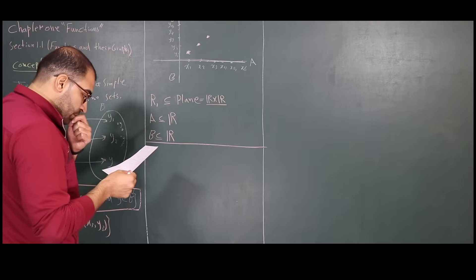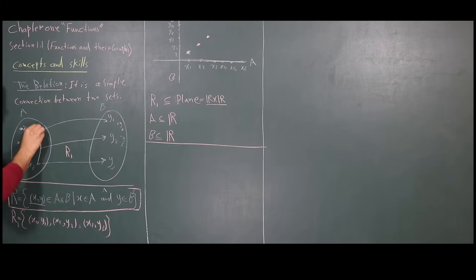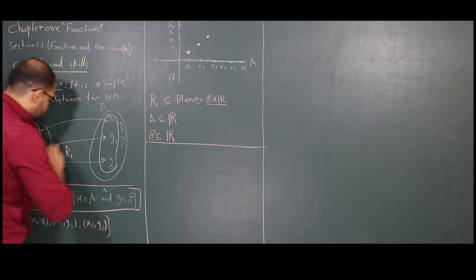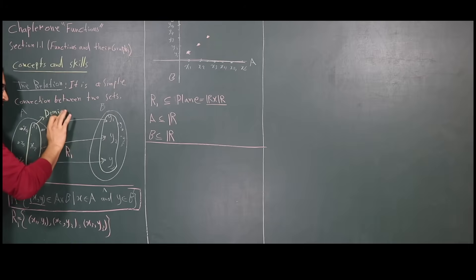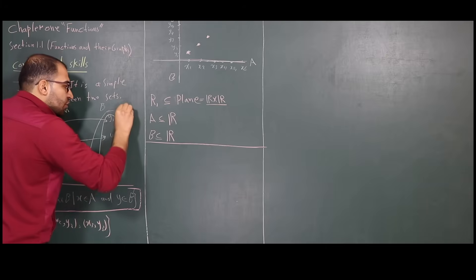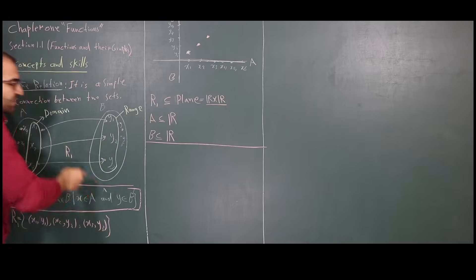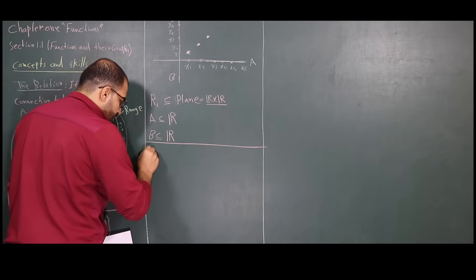Now let me clarify something. The set of connected elements on the left side — the source — is called the domain. The set of connected elements on the right side — the destination — is called the range. So we have the domain and the range.